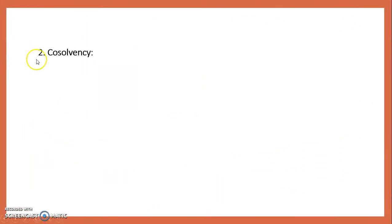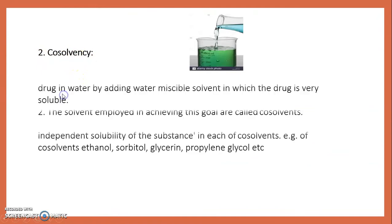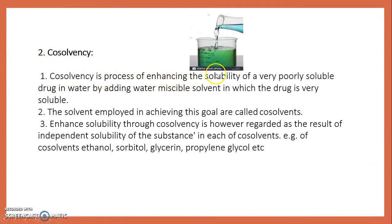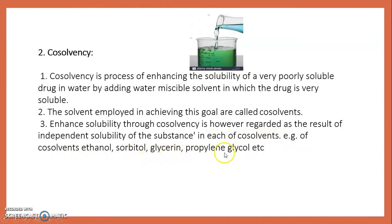Cosolvency is the process of enhancing the solubility of a poorly soluble drug in water by adding a water-miscible solvent in which the drug is very soluble. The solvents employed to achieve this goal are called co-solvents. The enhanced solubility through cosolvency is regarded as the result of independent solubility of the substance in each co-solvent. Examples of co-solvents include ethanol, sorbitol, glycerine, and propylene glycol.